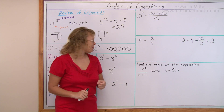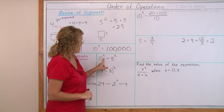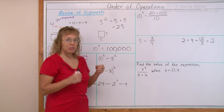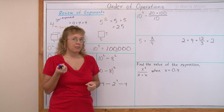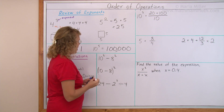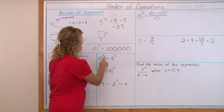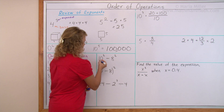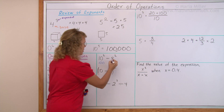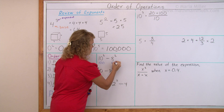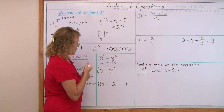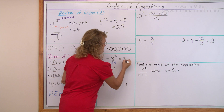Now we get to solve some problems. 10 squared minus 8 squared — which operation is to be done first? It's the exponents. 10 squared is 100, and 8 squared means 8 times 8, which is 64. So we get 100 minus 64, and the answer is 36.